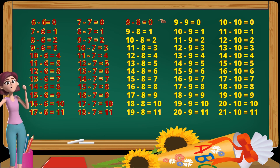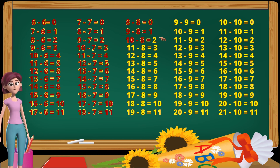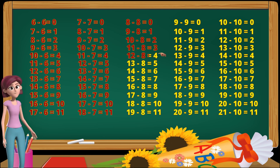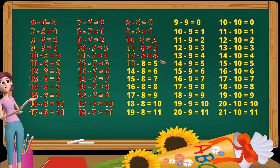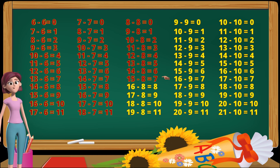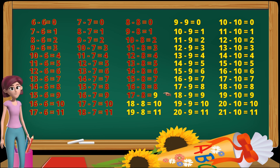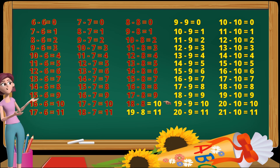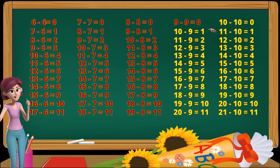8 minus 8 equals 0. 9 minus 8 equals 1. 10 minus 8 equals 2. 11 minus 8 equals 3. 12 minus 8 equals 4. 13 minus 8 equals 5. 14 minus 8 equals 6. 15 minus 8 equals 7. 16 minus 8 equals 8. 17 minus 8 equals 9. 18 minus 8 equals 10. 19 minus 8 equals 11. 9 minus 9 equals 0.